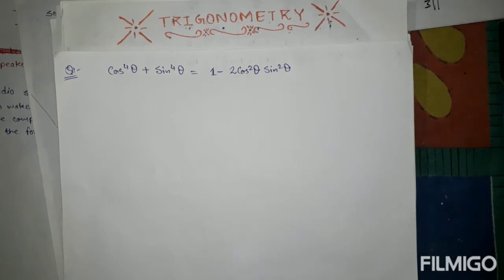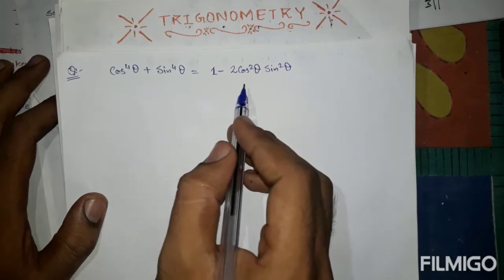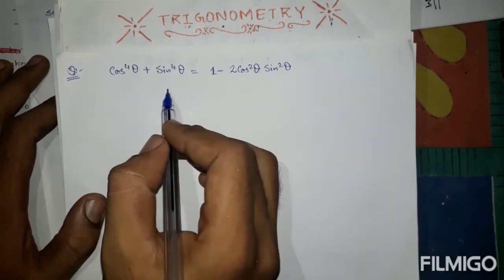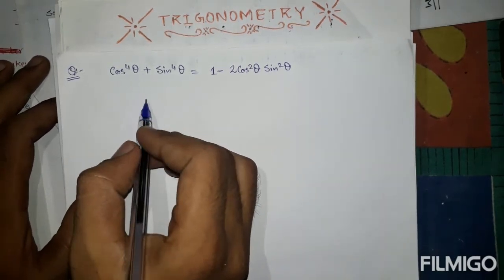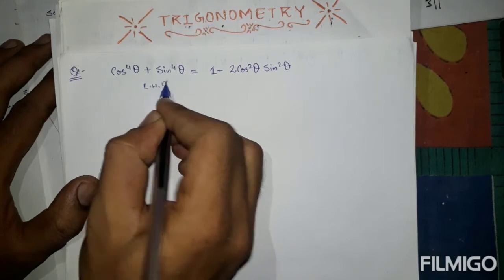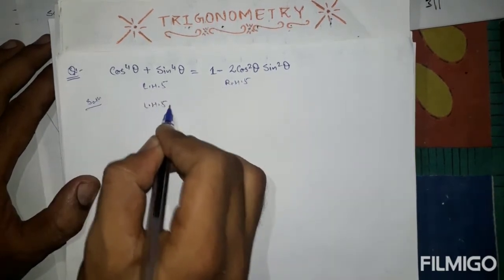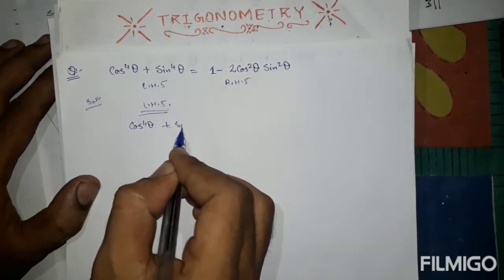Let's start today's class. The first question is: cos⁴θ + sin⁴θ = 1 - 2cos²θ·sin²θ. To solve this question, to prove LHS is equal to RHS, we follow the same rules. Take LHS and do the solution. LHS is cos⁴θ + sin⁴θ.